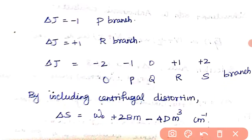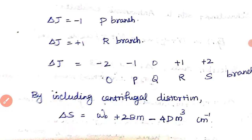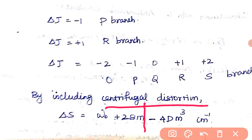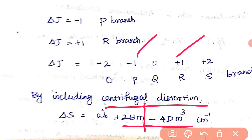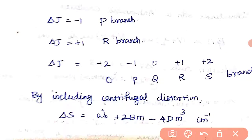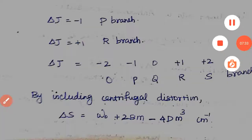Including rotational spectra and centrifugal distortion, the final equation becomes: ΔS = ω₀ + 2Bm − 4Dm³. So the important points are the selection rule, the branches observed, the band center value ω₀, and this final equation. This covers the rotational vibrational spectra of diatomic molecules. Thank you.